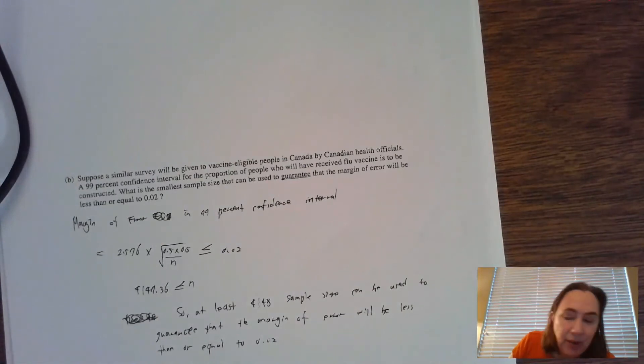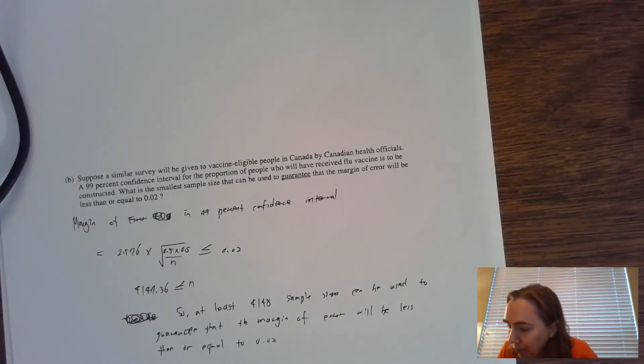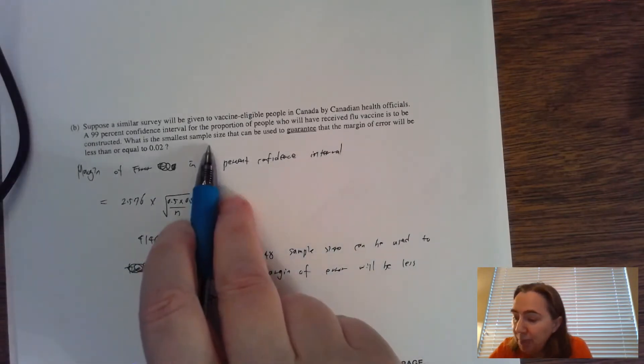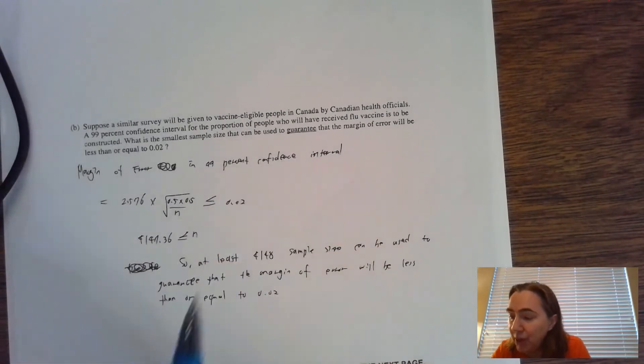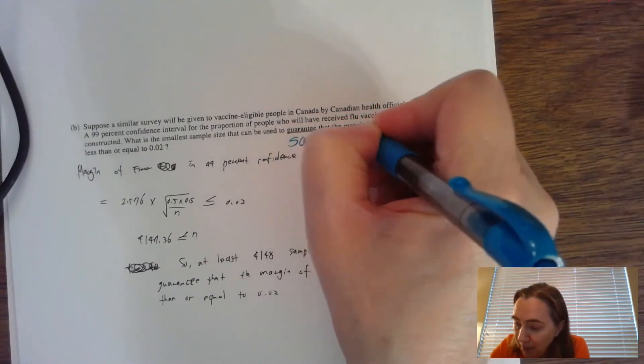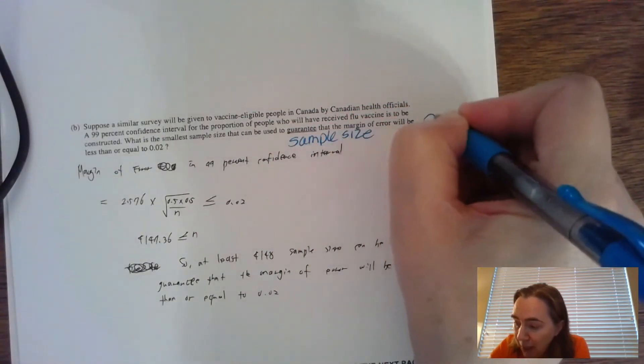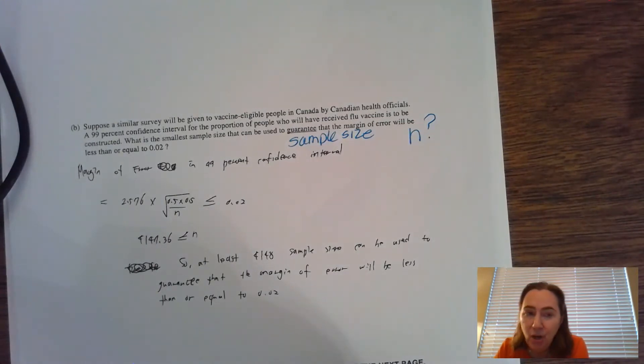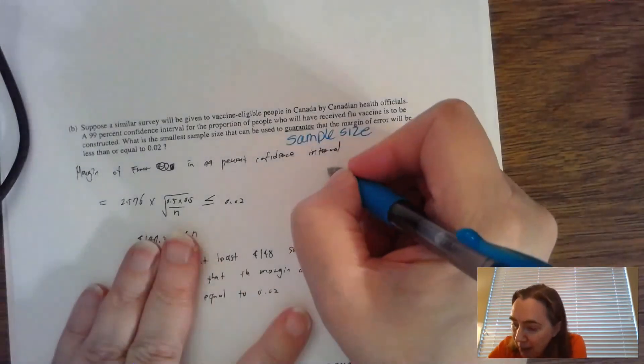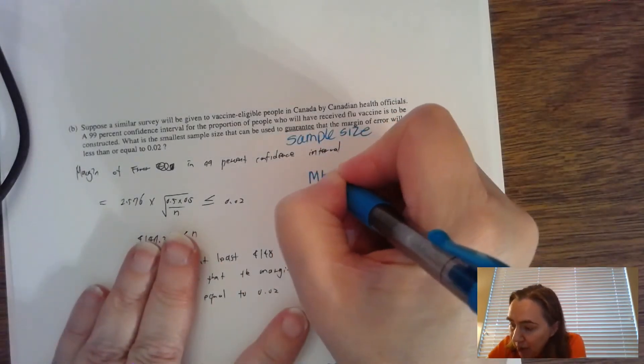Moving quickly on to B. Part B says suppose a similar survey was done in Canada—completely different place. They want to calculate a confidence interval, but they're asking: what is the smallest sample size that can be used to guarantee that the margin of error will be less than or equal to two percent? This one is a sample size problem, and that means you're trying to find out what n is.